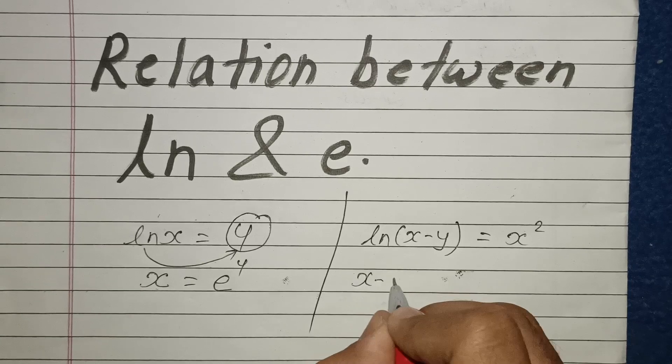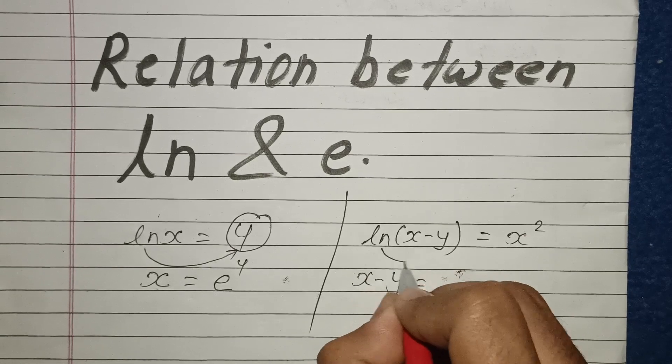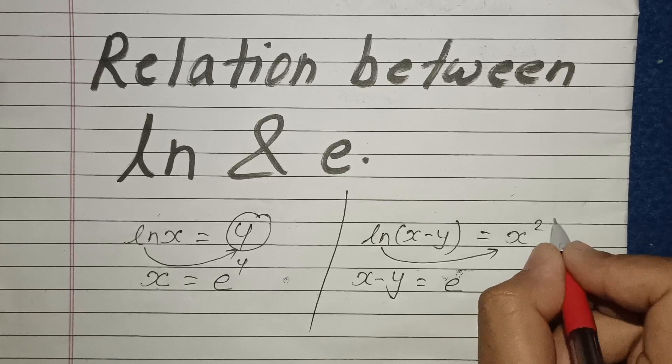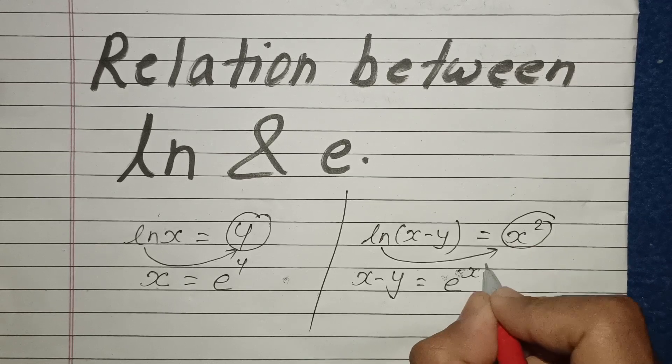Then x minus y is equal to, if ln goes here, it will become exponential e and this goes to power x square.